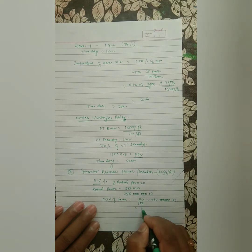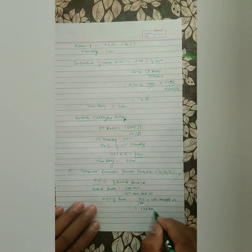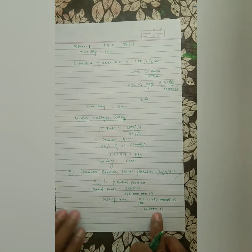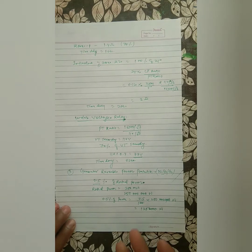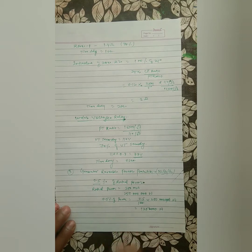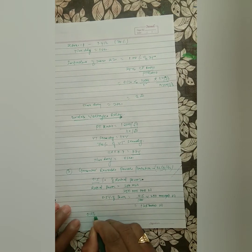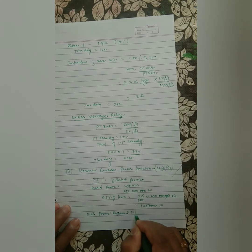0.5% of 250 MW works out to 1,250,000 watts (1.25 MW). We cannot put this setting directly in the relay; we have to calculate with reference to the CT and PT ratios. So 0.5% power referred to the relay means we take 1,250,000 watts and scale it by the PT ratio 110/√3 divided by 16500/√3.